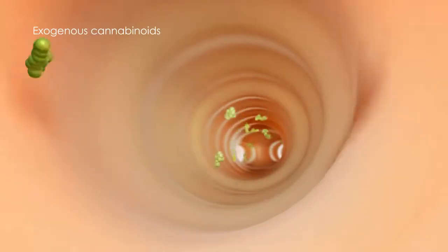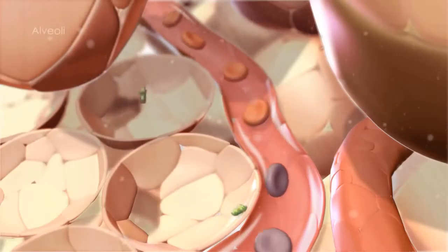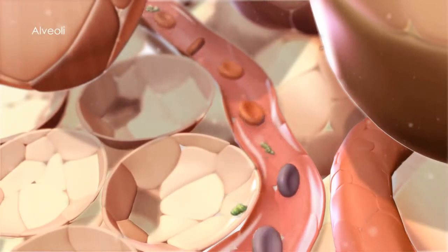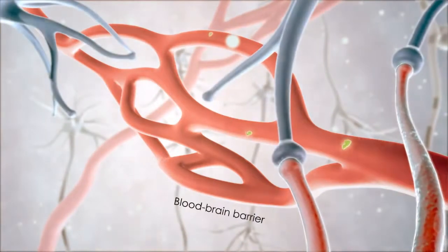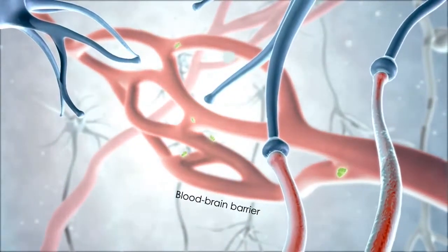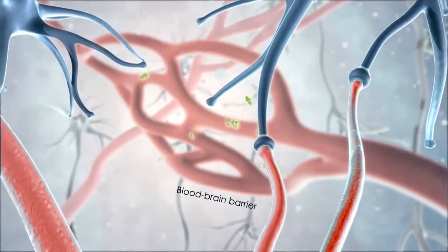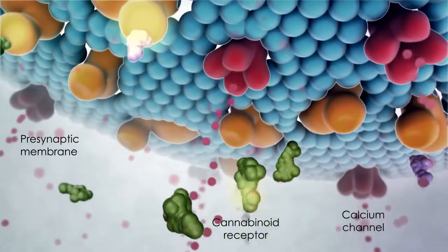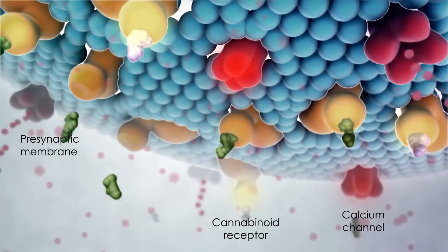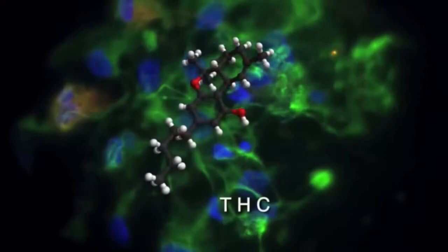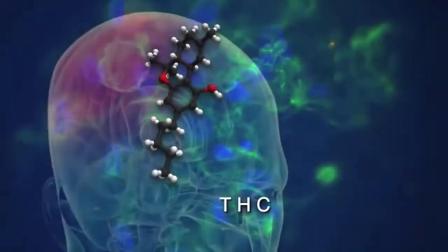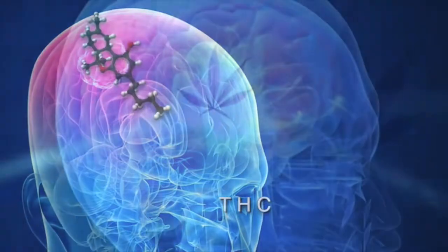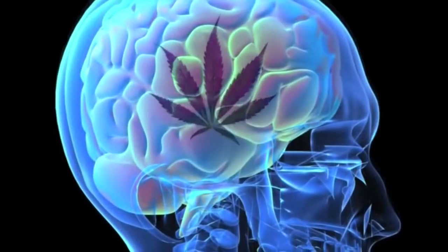When an individual inhales cannabis, the exogenous cannabinoids travel through the respiratory tract and alveoli and into the circulatory system towards the CNS. These exogenous cannabinoids can cross the blood-brain barrier and exert their modulatory effects on the abundant CB1 receptors. Here, they bind to cannabinoid receptors in the presynaptic neuron and mimic the effects of anandamide and 2-AG by decreasing the influx of calcium. The active component of cannabis, delta-9-tetrahydrocannabinol, more commonly known as THC, is responsible for its analgesic effects in both acute and chronic pain.